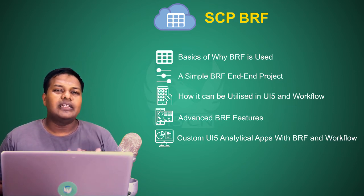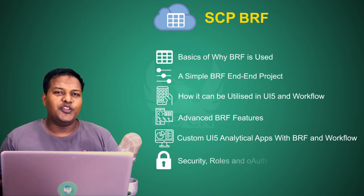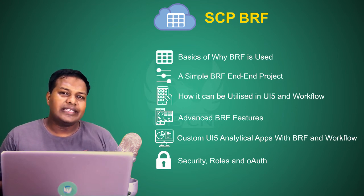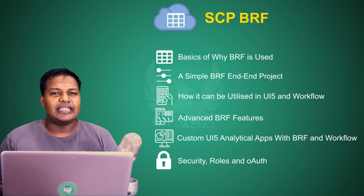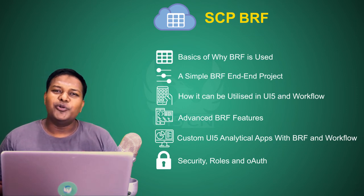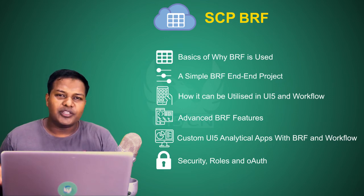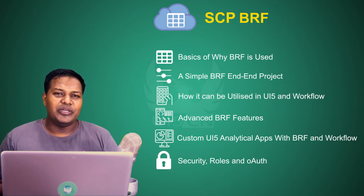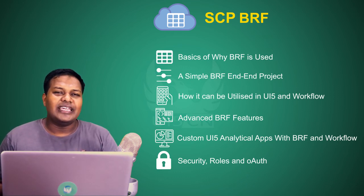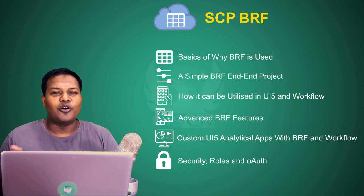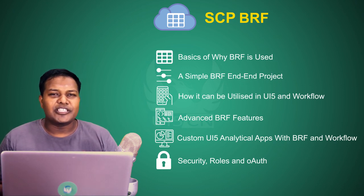In this final section, we will also cover what are the different types of roles a user needs to have to develop BRF, to create the decision table, or to work with BRF and use it in the application. We will also see OAuth — how OAuth can be utilized. We covered OAuth in the workflow course as well, where we saw how it can be utilized in our application, so you don't have to create a separate user ID but can have a client call the APIs and use BRF or workflow in their own application. OAuth remains valid for other services which you want to consume as a REST API. We will be covering all that with best practices.